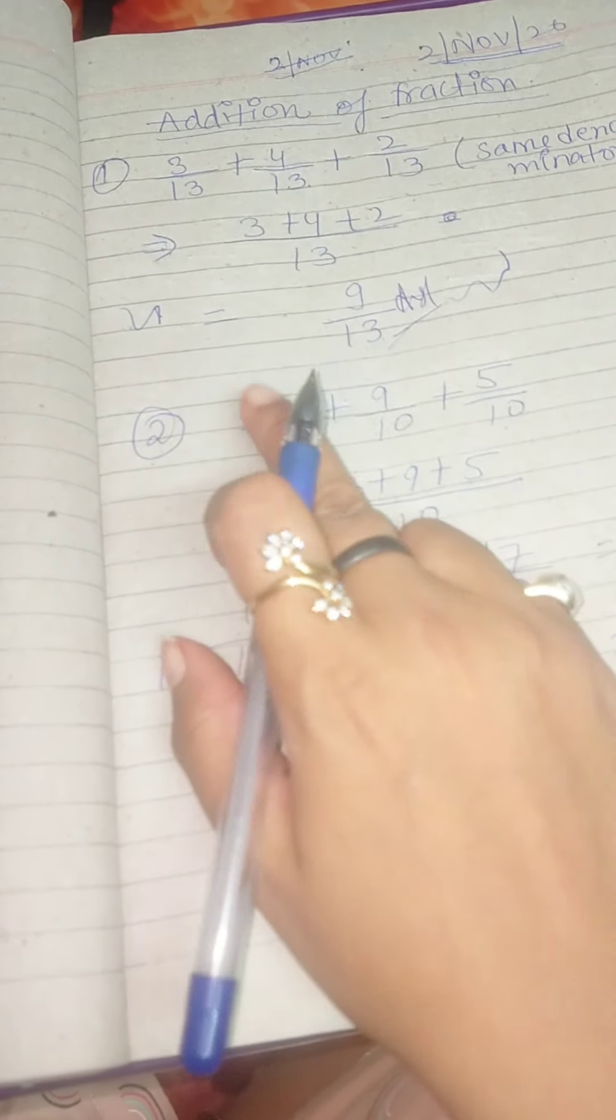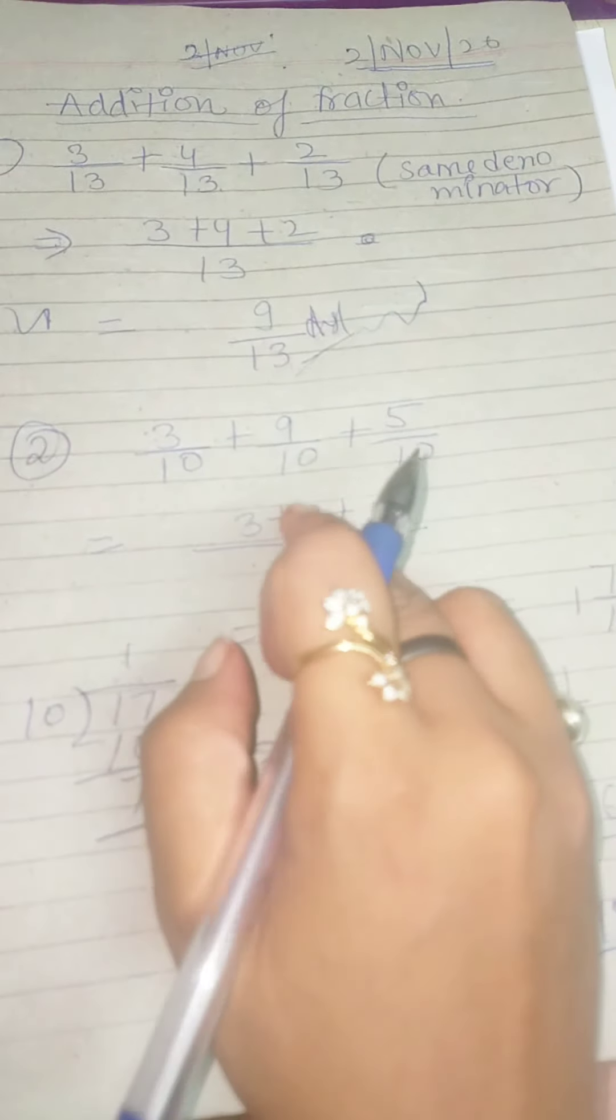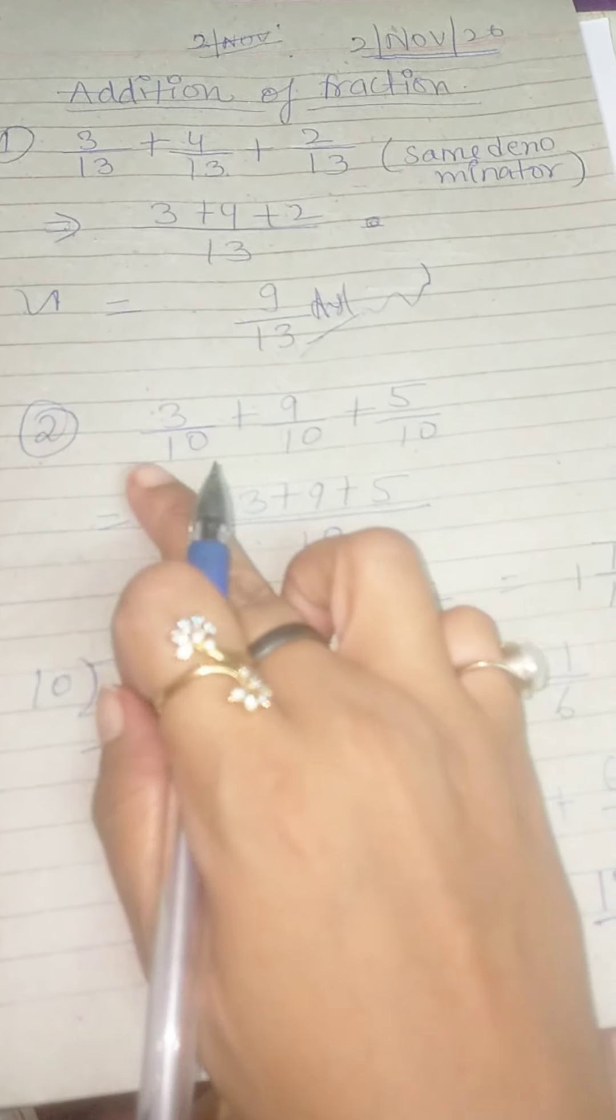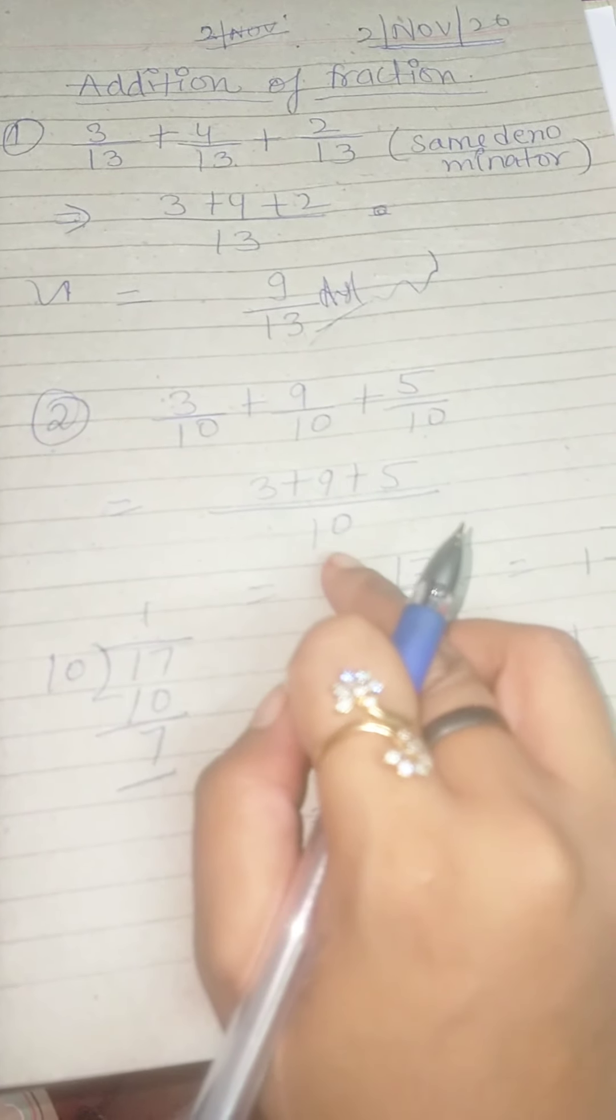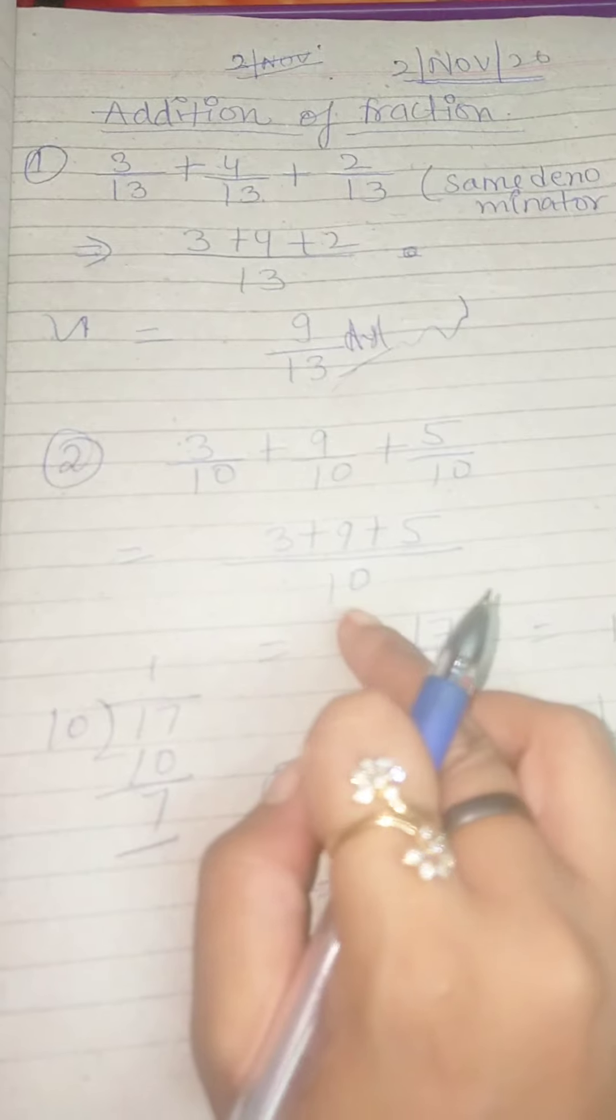Next: 3 by 10, 9 by 10, 5 by 10. Same denominator - take the denominator as common, which is 10.